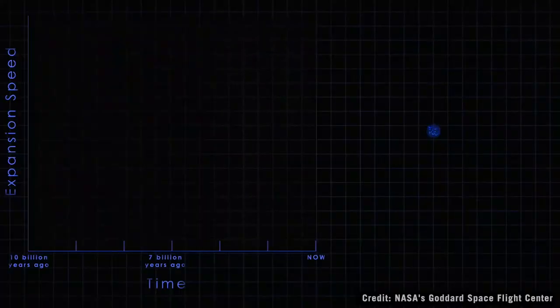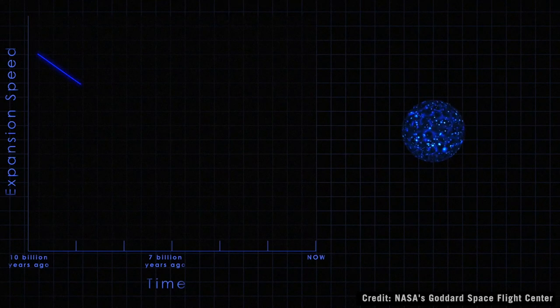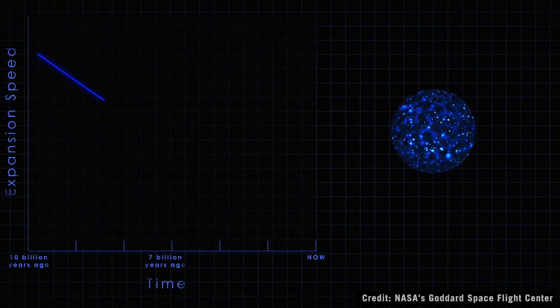And then you can measure the angle to that size. And by combining those two pieces of information, you can actually measure the distance to what you're looking at. And so if you can measure the BAO at a number of different distances in the universe, you can actually use that to measure how fast the universe has been expanding.